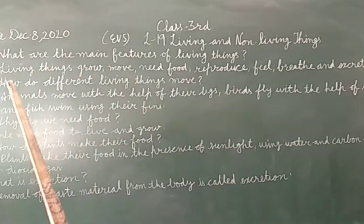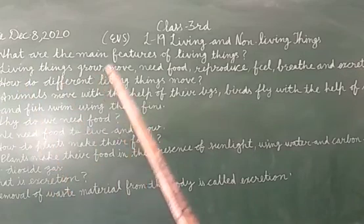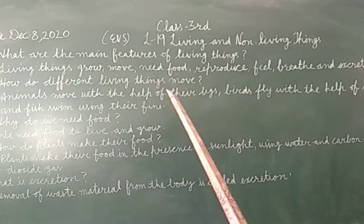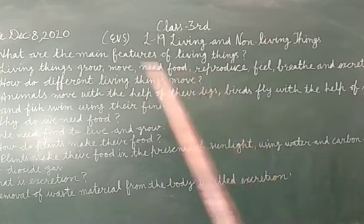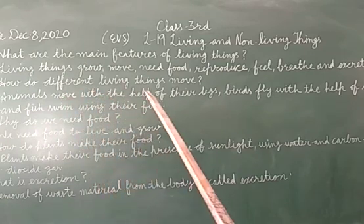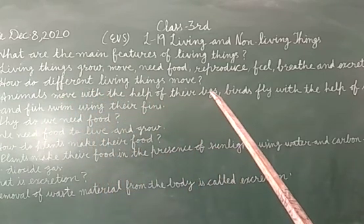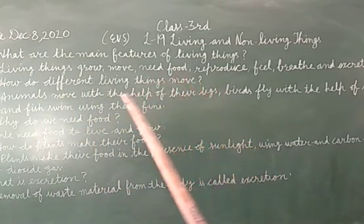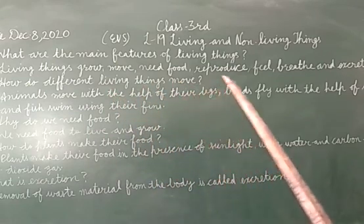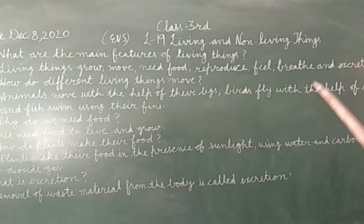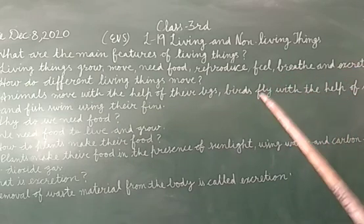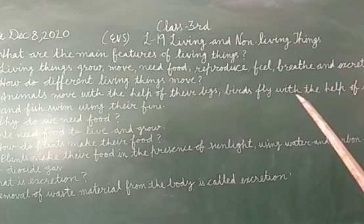Second question is: how do different living things move? Jo different living things hoti hain, woh kaisi chalti hain? Answer is: animals move with the help of their legs. Animals bhi living things hain, toh woh apni legs ki help se chalti hain. Birds fly with the help of wings. Jo birds hoti hain, woh bhi living things hain aur woh wings ki help se urte hain.